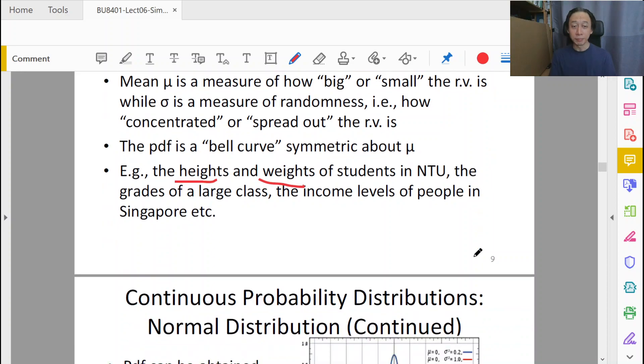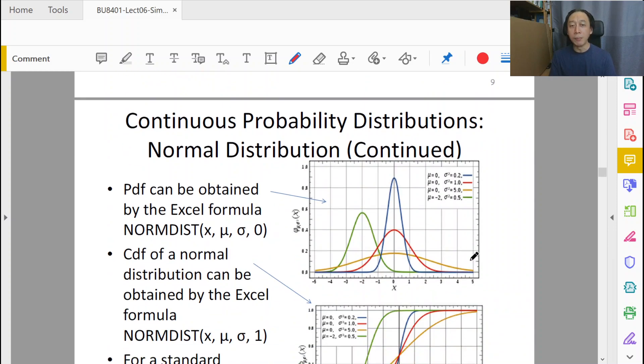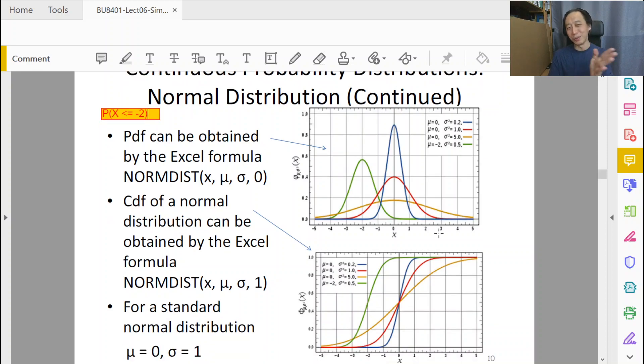But let's now focus on calculation. We ask the same question: what is the probability of X, the normal distribution, less than or equal to a particular number? For example, P(X ≤ -2). Let's look at the green curve because it's protruding to the left, so it's easier to illustrate. The green curve here has a mean of -2 and a standard deviation of 0.5. The idea is, what is the probability of the green curve to the left of -2? In other words, what's the area under the green curve from minus infinity to -2?